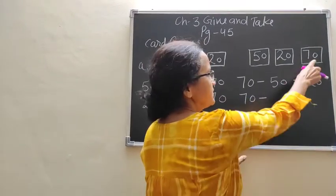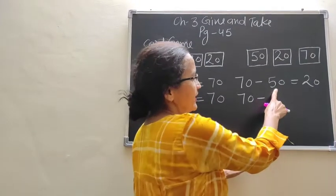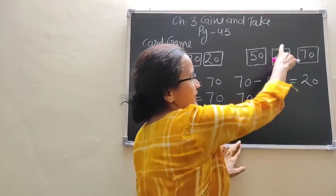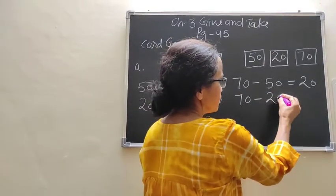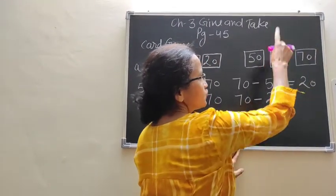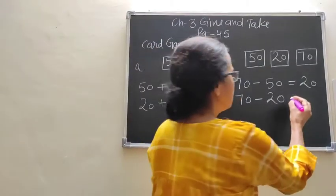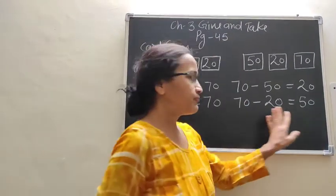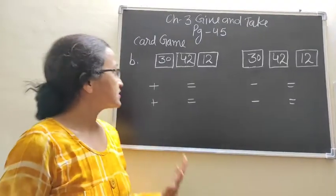Now next, again right here: 70. You had written 50 before; this time write 20. So right here: 20. You have written 70 and 20, so the remaining number is 50. So right here: 50.